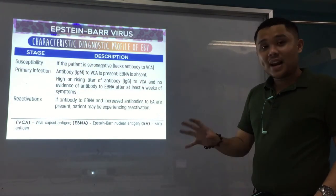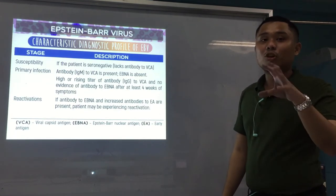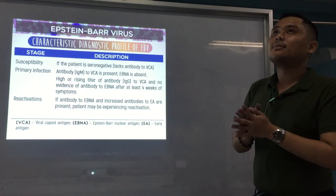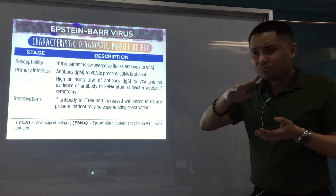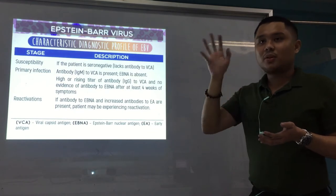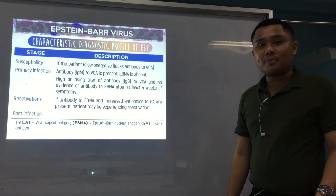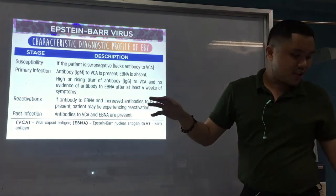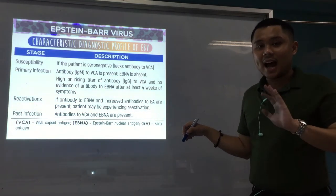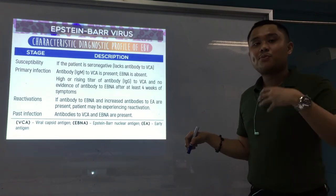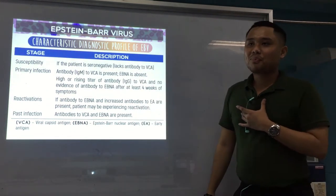For reactivation, if antibody to EBNA and increased antibodies to EA are present, the patient may be experiencing reactivation. EBNA and EA are the markers. For past infection, antibodies to VCA and EBNA are both present. To differentiate primary from past infection: look at EBNA. If antibody to EBNA is present, that's a past infection. If EBNA is absent but VCA is positive, that's primary or acute infection. It's very easy to interpret.